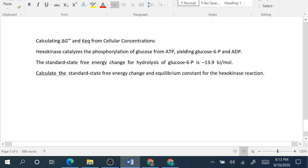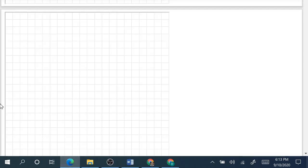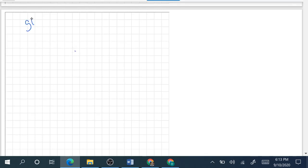Calculate the standard free energy change and equilibrium constant for the hexokinase reaction. How are we going to do this problem? It takes a little bit of thought. Let's think about the overall reaction: glucose plus ATP yields glucose 6-phosphate plus ADP.